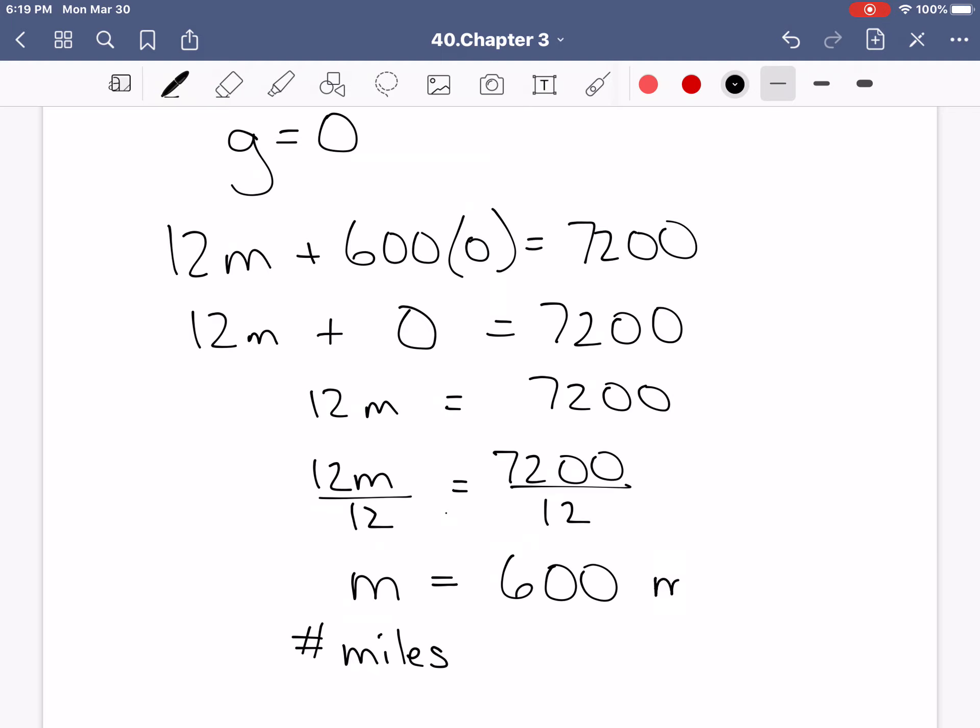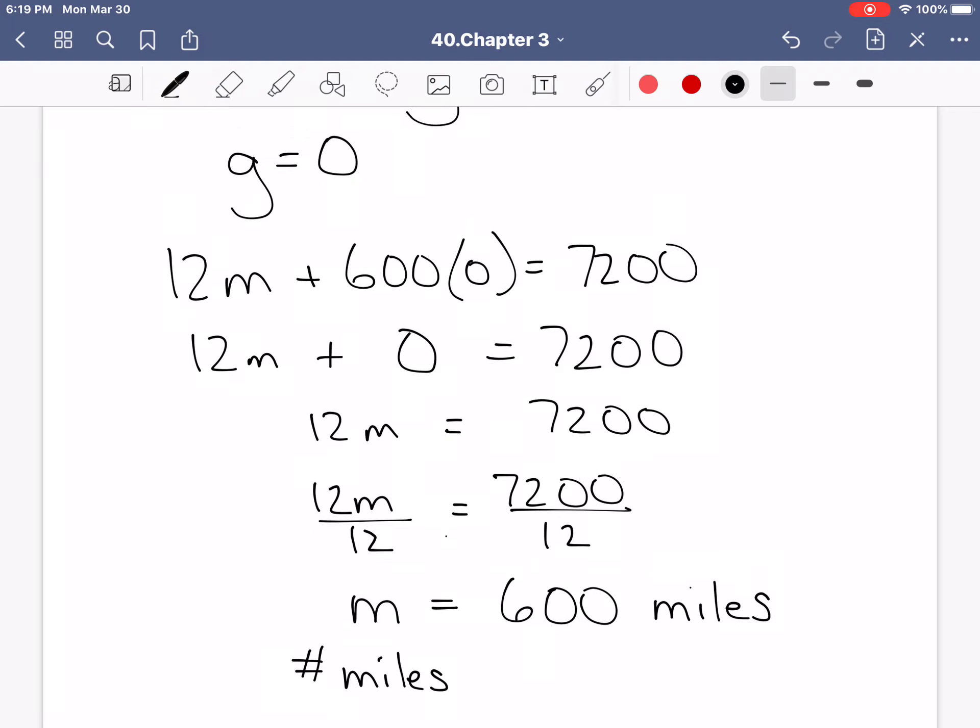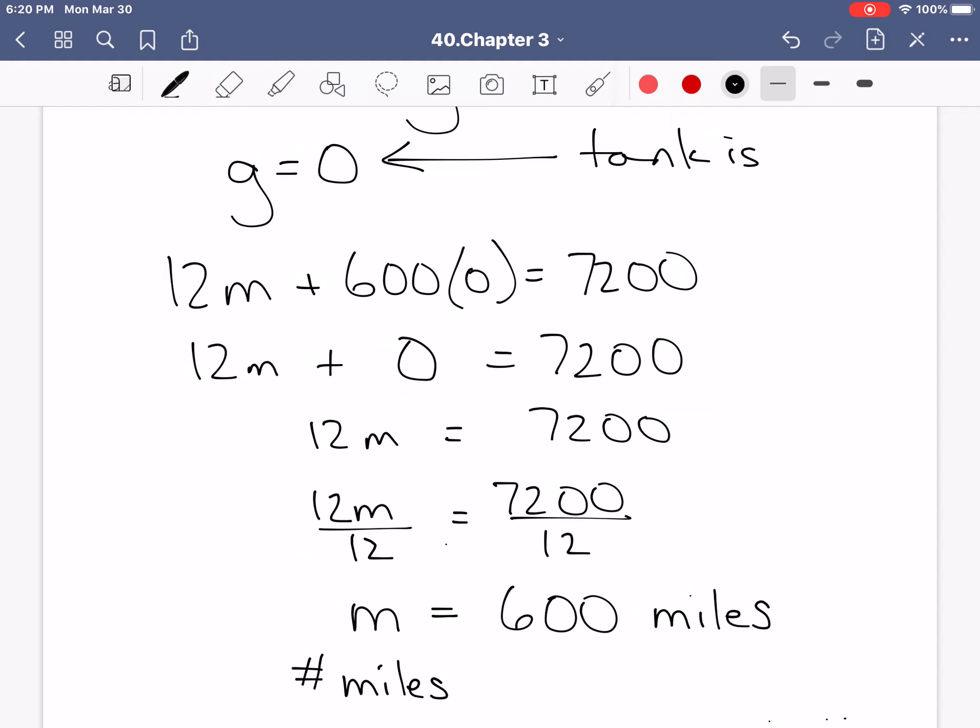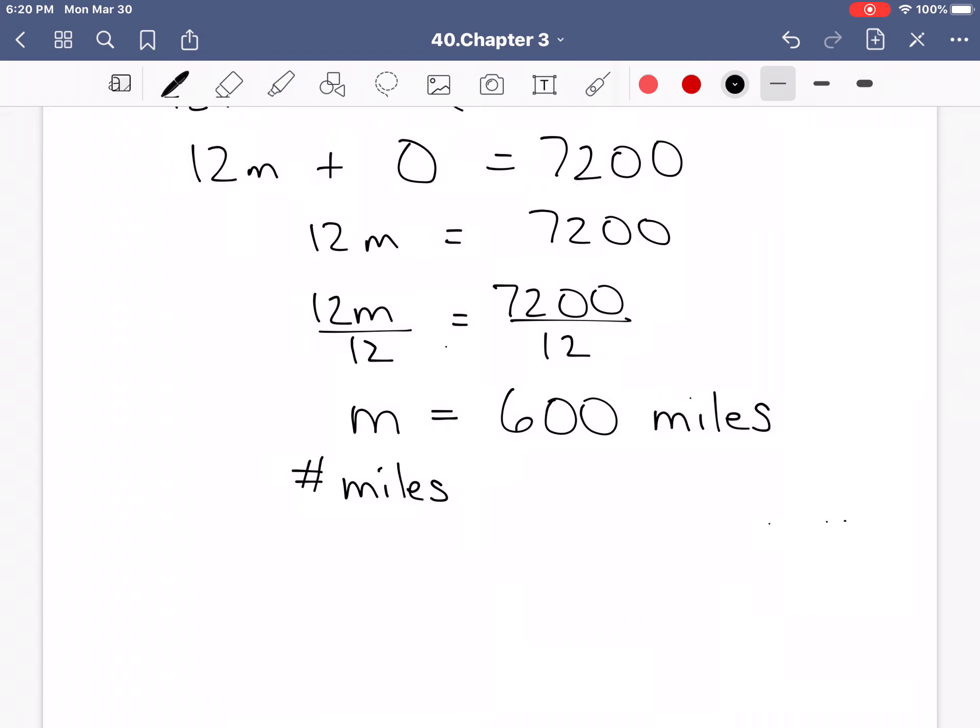So this is 600 miles, and this is 600 miles when g is zero. So in other words, the tank is empty. Which means that if we drive on the full 12 gallons of gas that fit in the car, we could make it 600 miles. So this is the, what's the word I'm looking for, the total range of the car on a full tank of gas. Woohoo!